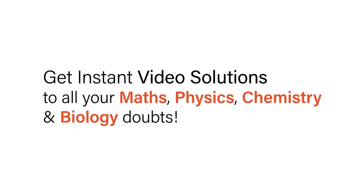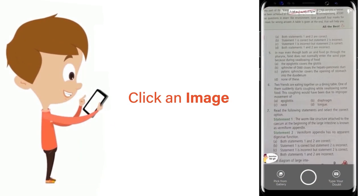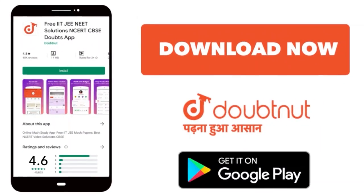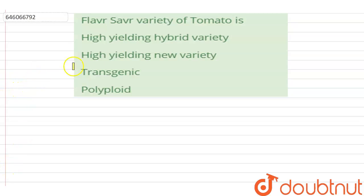With Doubtnut, get instant video solutions to all your maths, physics, chemistry, and biology doubts. Just click the image of the question, crop the question, and get instant video solution. Download Doubtnut app today. Hello students, the question is: Flavr Savr variety of tomato is...